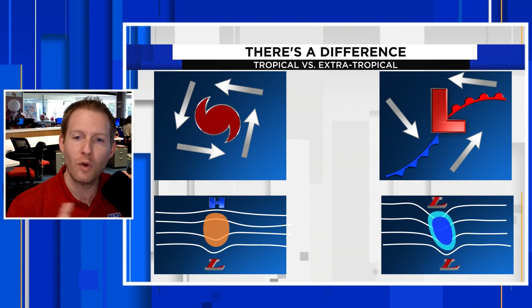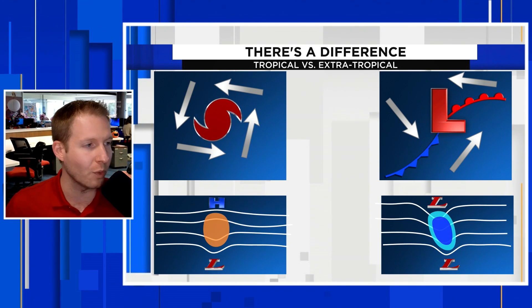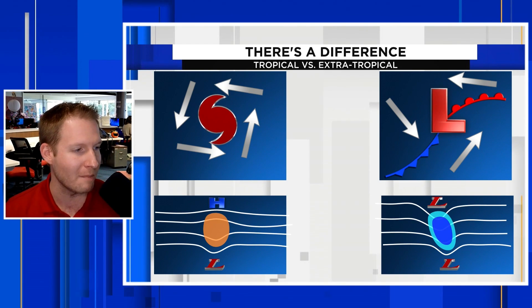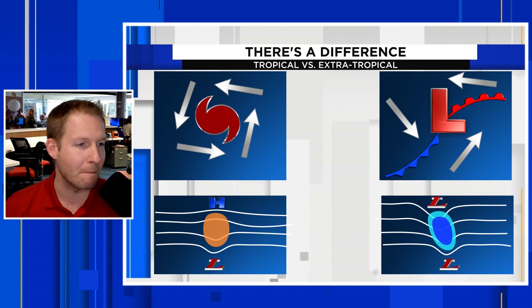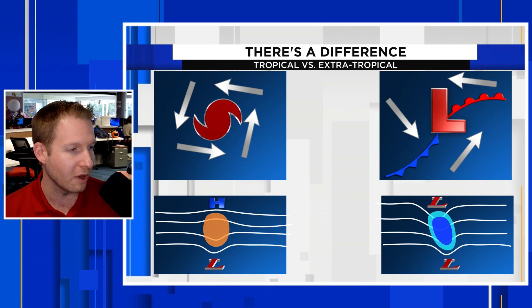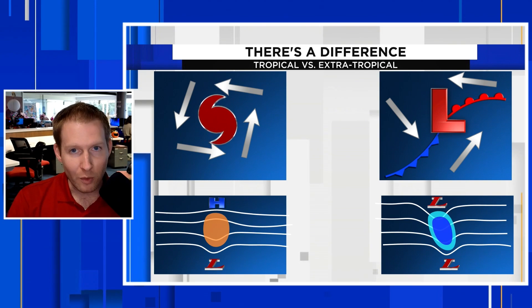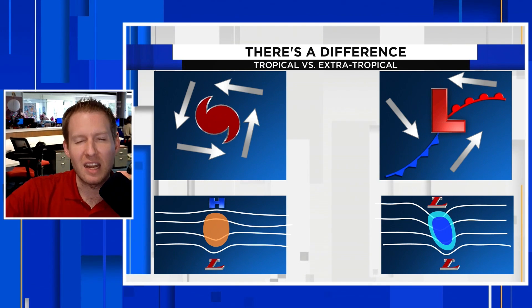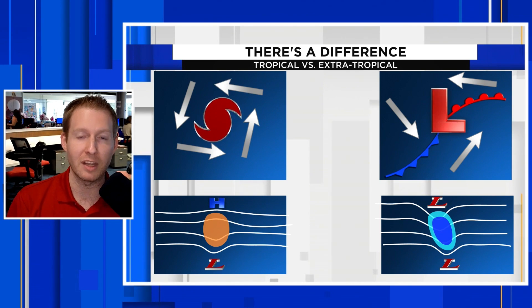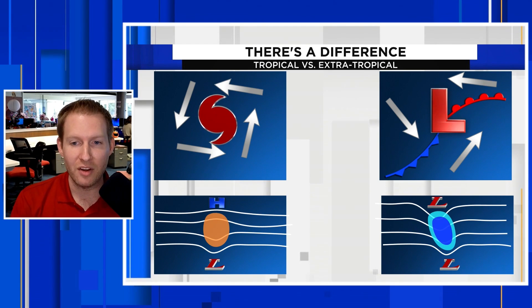Starting on the left — this is the tropical side of things. We know that hurricane symbol all too well. There's counterclockwise flow at the surface, tightly packed around the center. Looking at the bottom left screen where you see the L, the H, and that little orange blob — those are the different layers of the atmosphere. Hurricanes and tropical systems don't like wind shear. They like to be vertically stacked, like a nice stack of pancakes, kind of like the Empire State Building versus the Leaning Tower of Pisa. That's why they don't like wind shear.